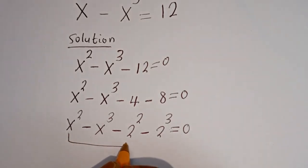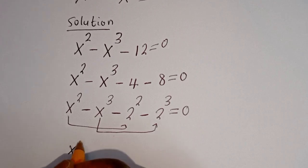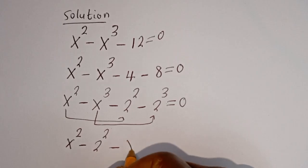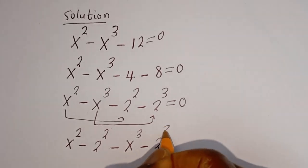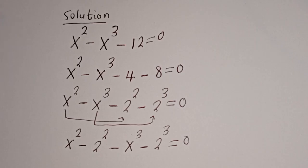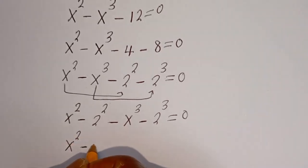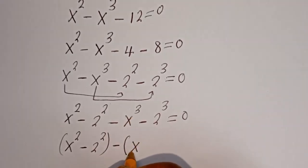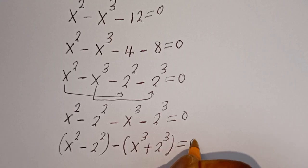Now let's compare this with this and pair this with this. Then we have s squared minus 2 squared, and here minus s to the power of 3 then minus 2 to the power of 3, is equal to 0. Then this can be written as: bracket s squared minus 2 squared, then minus bracket s to the power of 3 plus 2 to the power of 3, is equal to 0.